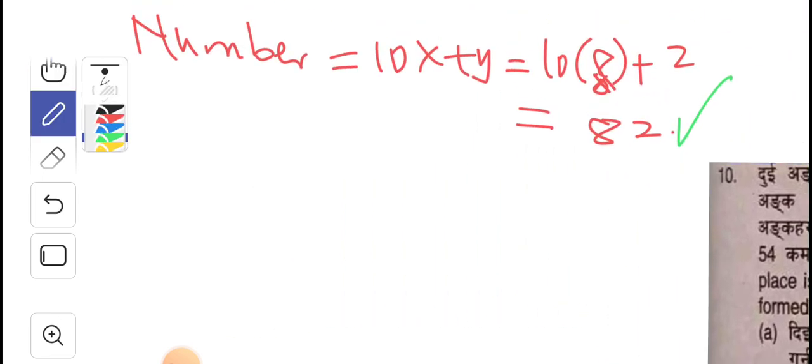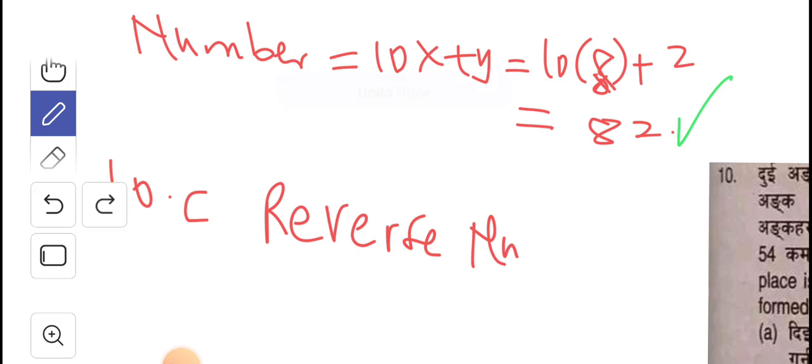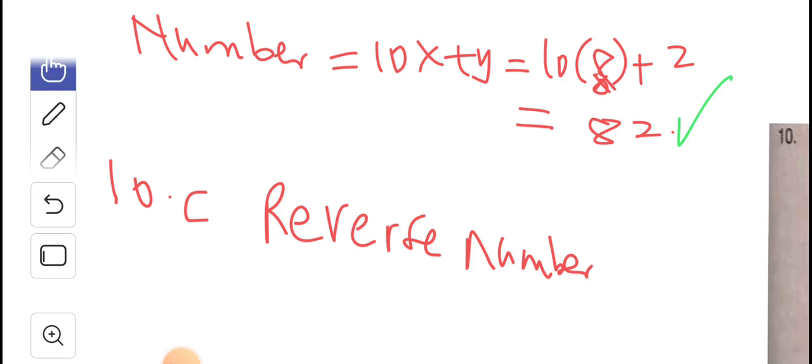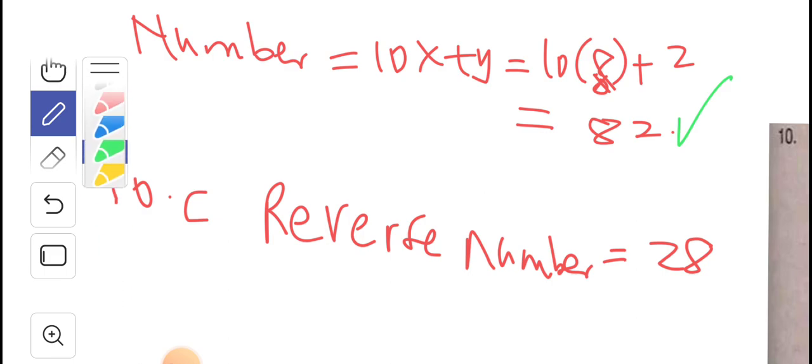So, we're going to look at 10c. So, we're going to look at the reverse number. The reverse number. Okay. What is the reverse number? The reverse number. You reverse and you get 28 by reversing the two digits. And that's the answer. And we have solved this question.